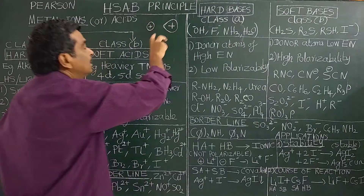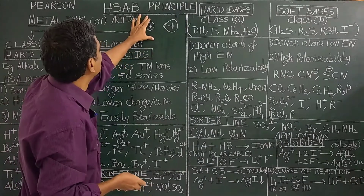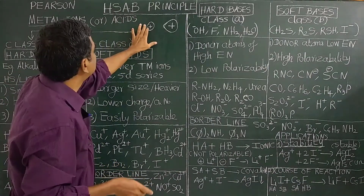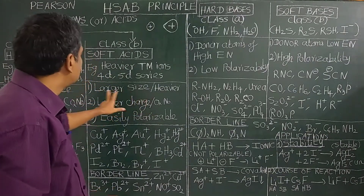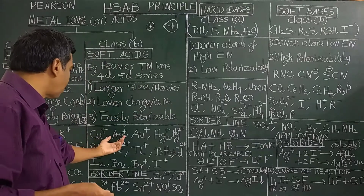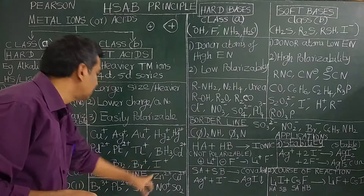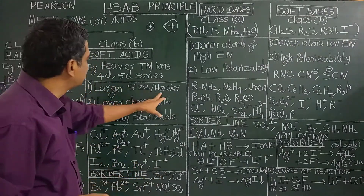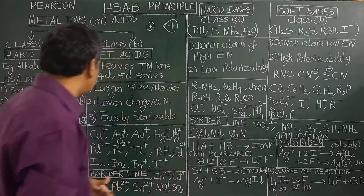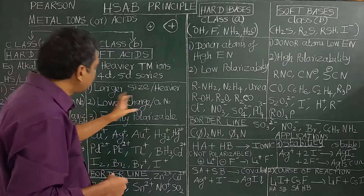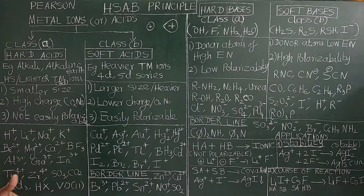Hard acids are not easily polarizable. In contrast, soft acids are metal ions of larger size — for example, Cu+, Ag+. They are heavier metal ions with lower charge and lower oxidation number.